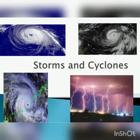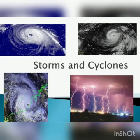Next, cyclones. A cyclone is a huge revolving storm caused by very high speed winds blowing around a central area of very low pressure in the atmosphere.